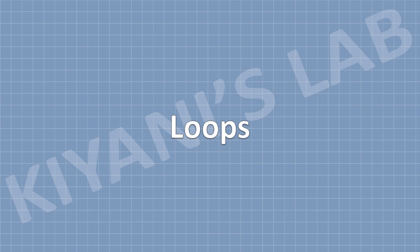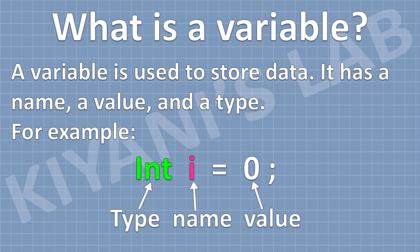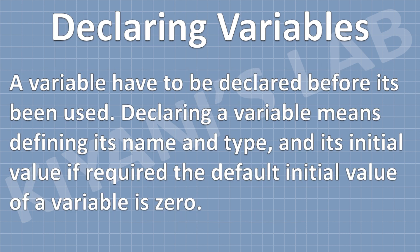Before learning about loops, we need to know about variables. A variable is used to store data — it has a name, a value, and a type. For example, int i equals 0. Here, int is the type of the variable, i is the name, and 0 is the value. A variable has to be declared before it is used. Declaring a variable means defining its name, type, and initial value if required. The default initial value of a variable is 0.